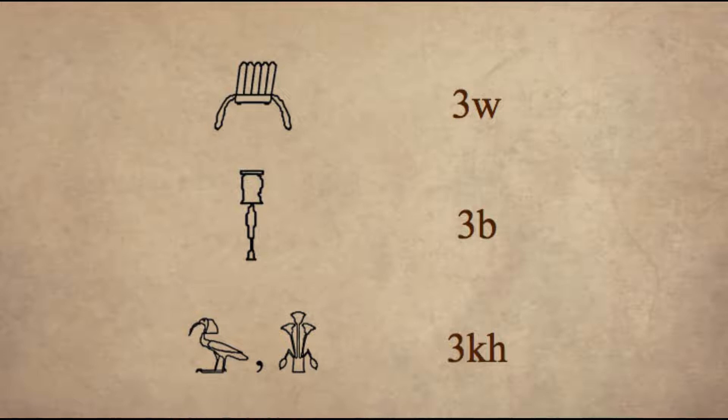So last time we started explaining the biliteral hieroglyphics and how they function. Today we're going to start with biliteral hieroglyphics that start with the sound A. There are three of those hieroglyphics.